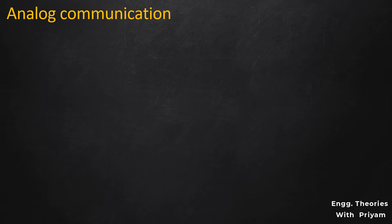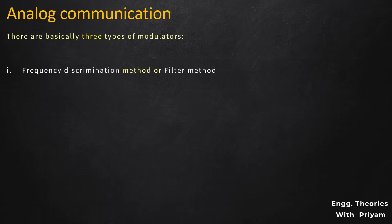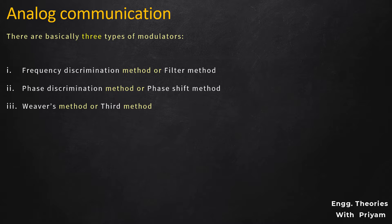There are basically three types of modulation processes that can be used for the generation of the SSBSC modulated signal: the frequency discrimination method or filter method, the phase discrimination method or phase shift method, and the Weaver's method or third method. In this lecture, we will see how the frequency discrimination method or filter method can be used. Among all methods, the frequency discrimination method is one of the most straightforward. In this method, an SSBSC modulated signal is generated by filtering a DSBSC modulated signal using a bandpass filter.